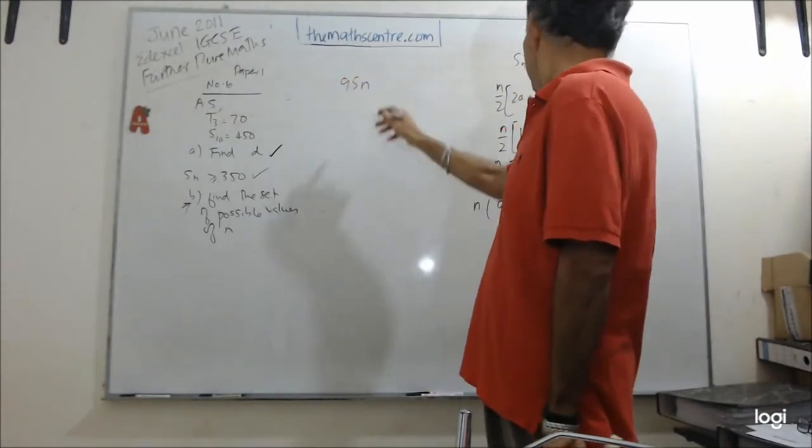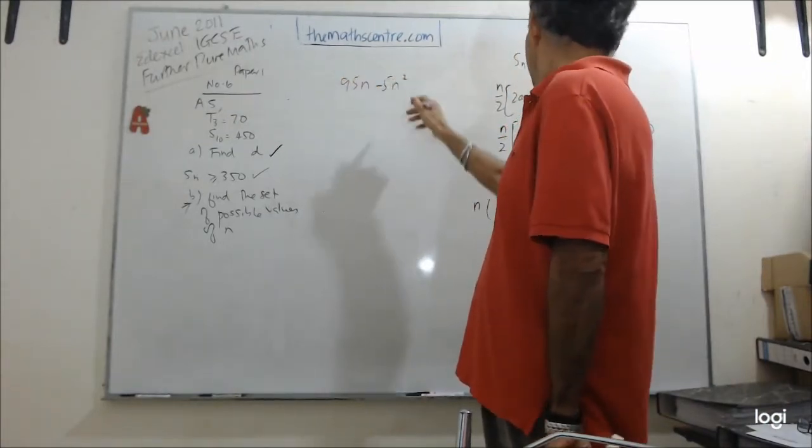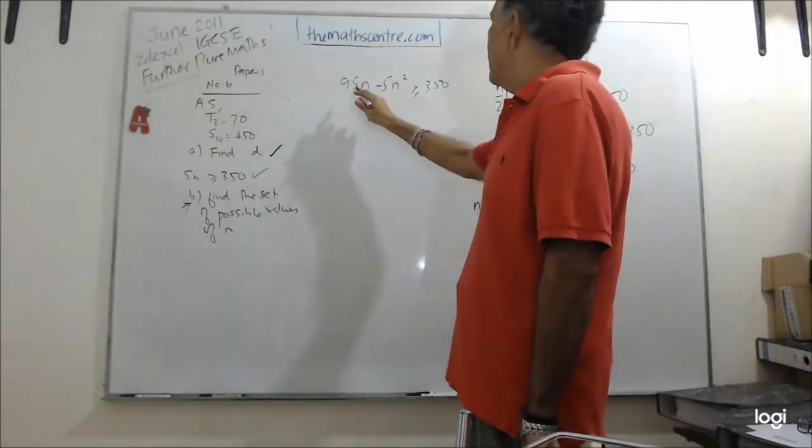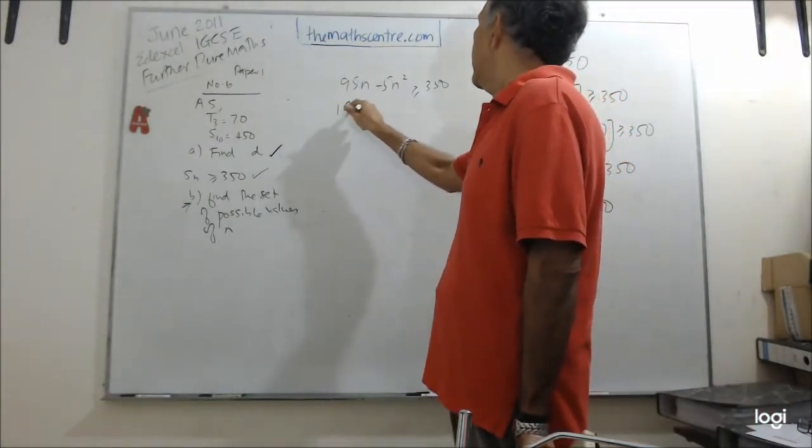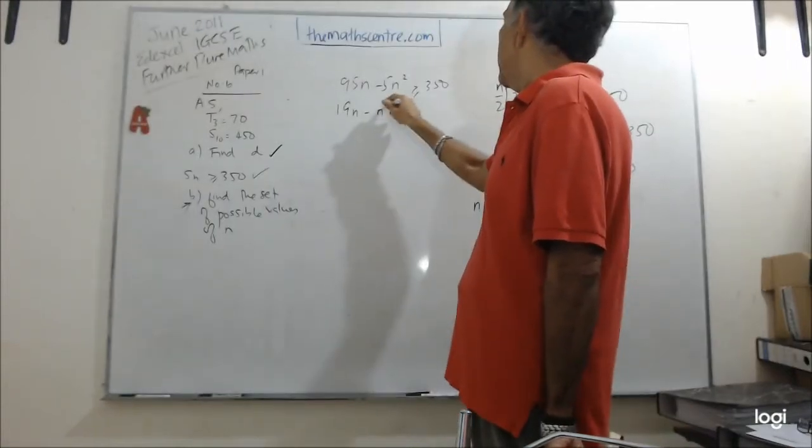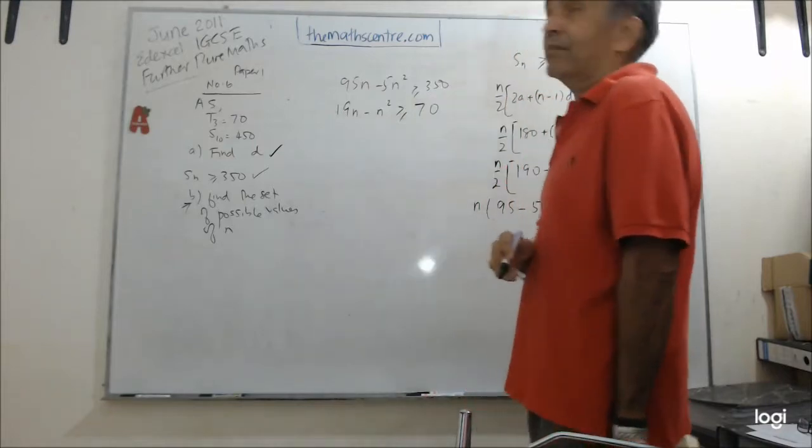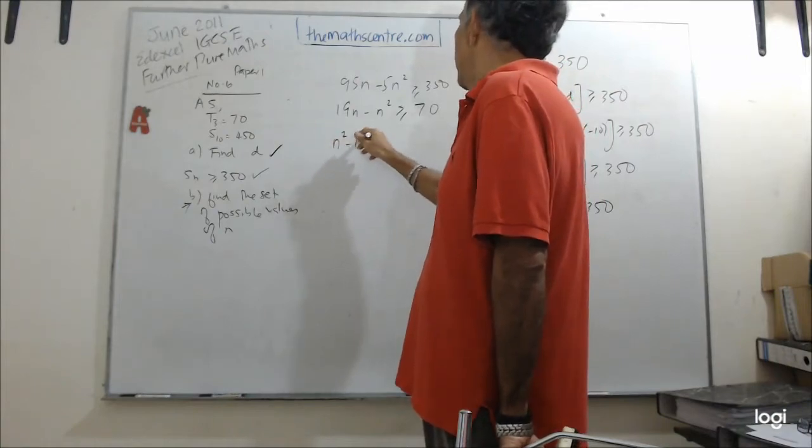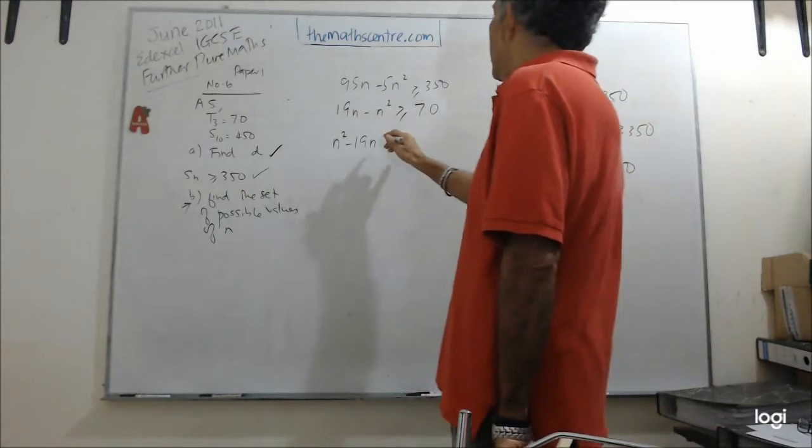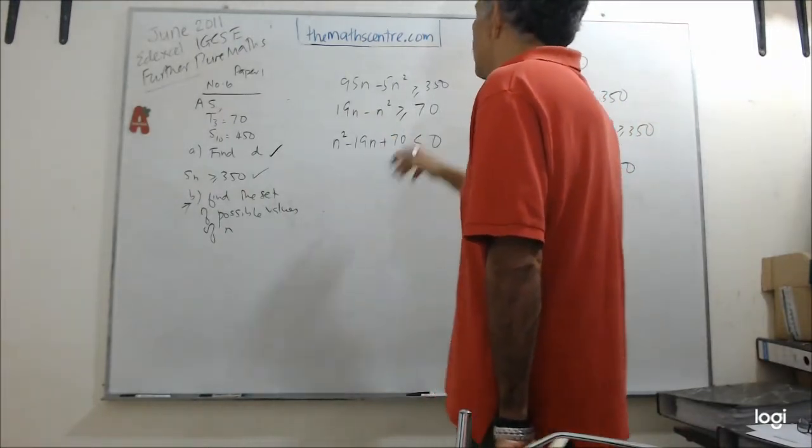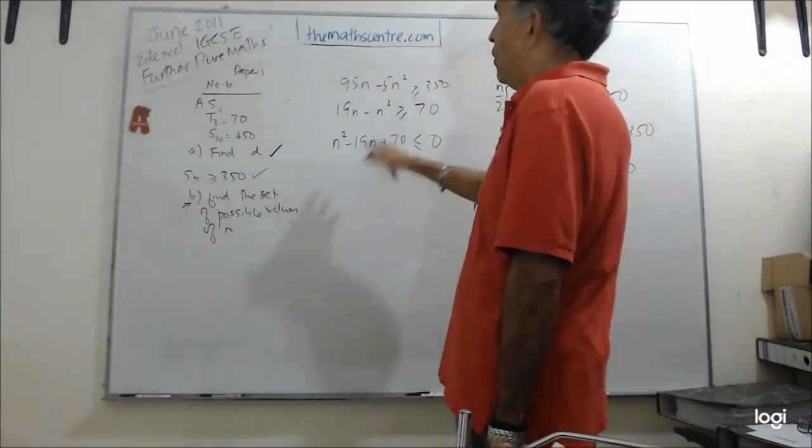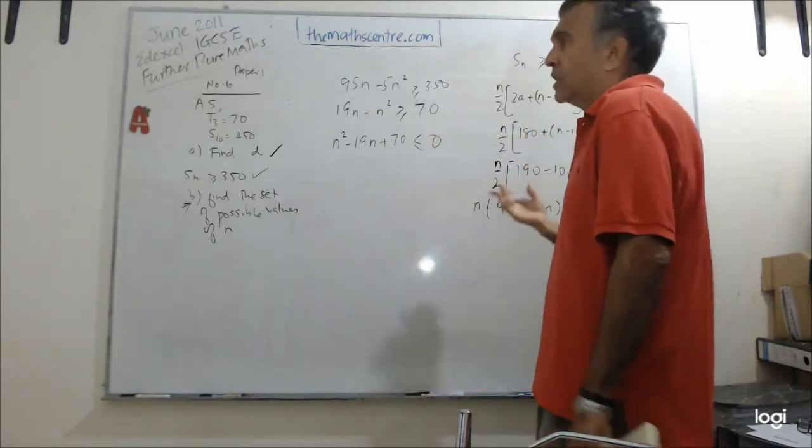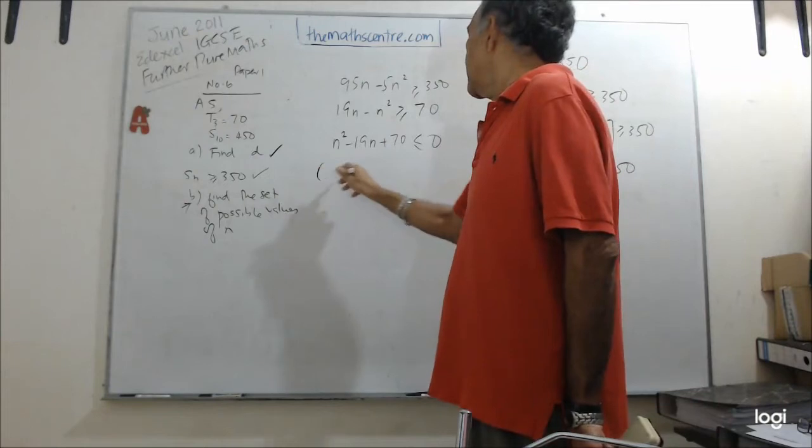95N minus 5N squared divided by 5. You divide it by 5, you will have what? 90N. So now I'll have, just rearranging my inequality, I'll have N squared minus 19N. Moving on to the right hand side, plus 70 will be less than or equals to 0. All I've done is I've just rearranged the inequality. Move the N squared to this side, move the 19N. And so I have 0 bigger than something. So that something will be less than 0. So now we can do some factoring.